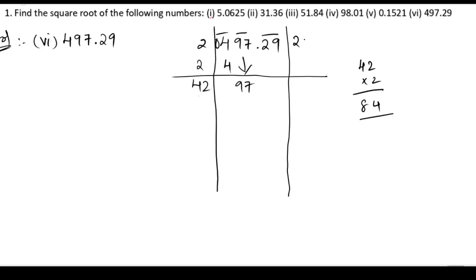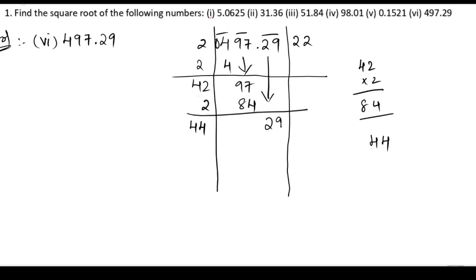So we got 84. We write 2 again, so 4 plus 2 is 4, giving 44. We bring 29 down. 7 minus 4 is 3, giving 1329. In the 4 table the nearest number — we get 12 from 4 times 3.